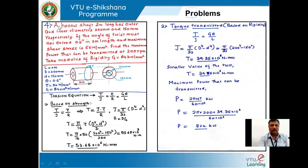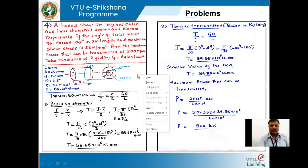Let us go through this problem. A hollow shaft two meters long has outer and inner diameters of 200 mm and 150 mm respectively. If the angle of twist is to be restricted to 0.5 degrees in a length of two meters and the maximum shear stress allowed is 50 N/mm², find the maximum power that can be transmitted by the shaft running at 200 rpm. Take modulus of rigidity as 84 kN/mm².